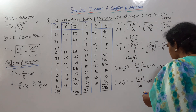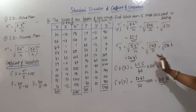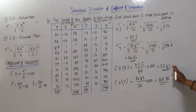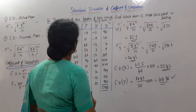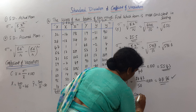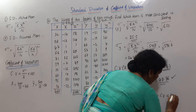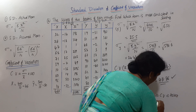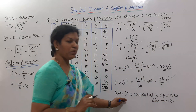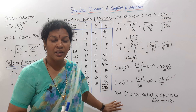CV calculations are done. Which team is more consistent? X has CV 55.43 and Y has CV 48.86. Since consistency corresponds to lesser CV, team Y is more consistent. Conclusion: Team Y is more consistent in scoring as its CV is lesser than team X's CV.